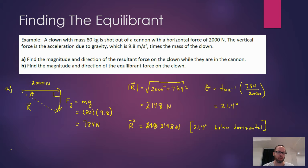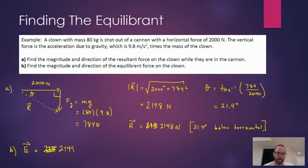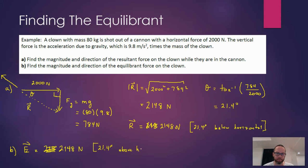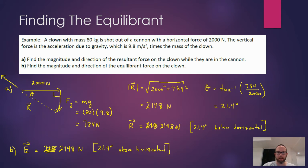Having done part A, we can now do part B without any new math. The equilibrant is opposite to the resultant — opposite vectors have the same magnitude but opposite direction. So the equilibrant will be pointing up and to the left at 21.4 degrees above horizontal. If the clown is being shot to the right, the equilibrant points to the left. In that example our triangle of forces was a right angle triangle.